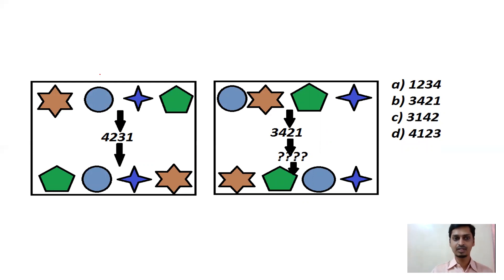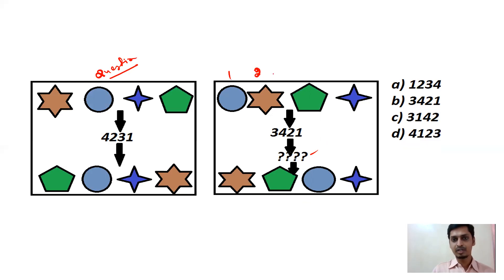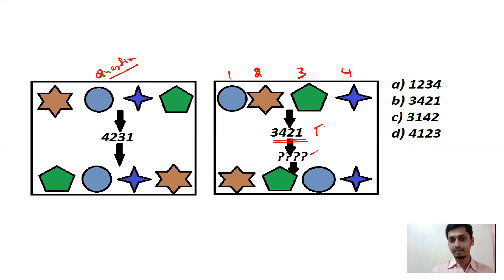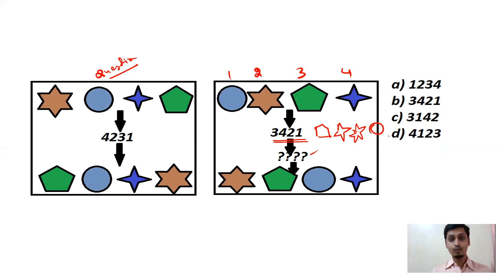This is a double manipulation question. First write 1, 2, 3, 4 and note the arrangement 3, 4, 2, 1. So: 3 gives a pentagon, 4 gives a star, 2 gives a six-pointed star, and 1 gives a circle. Now write 1, 2, 3, 4 over those output symbols for the second manipulation.